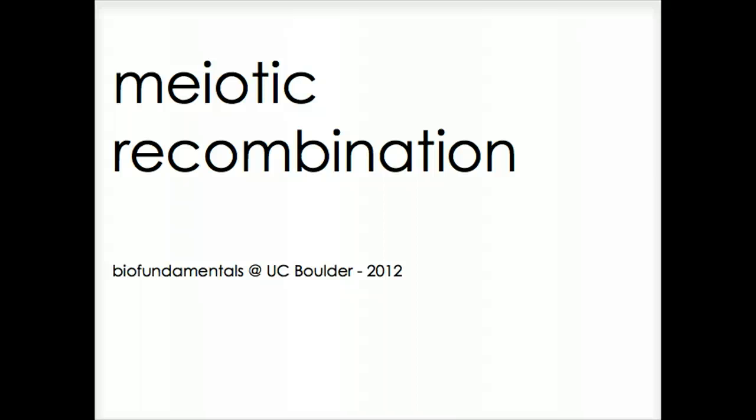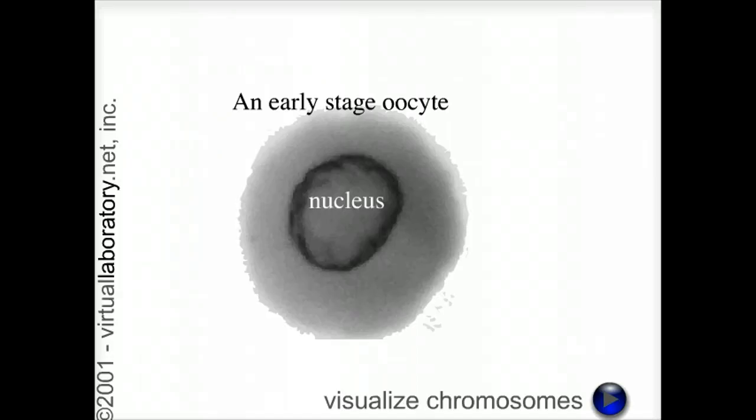Meiotic recombination. Another process that occurs during meiosis and generates genetic diversity and variation is recombination between chromosomes. Let's look at what's going on.